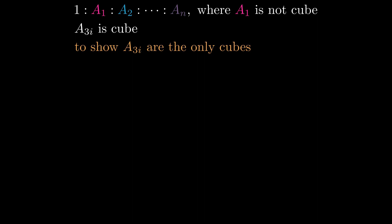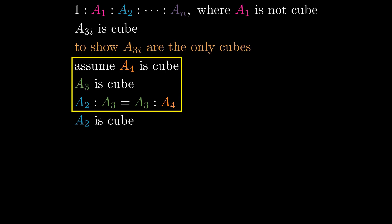By way of contradiction, assume A4 is a cube. We know A3 is a cube. A2 to A3 is proportional to A3 to A4. A3 and A4 being cube means A2 is cube.